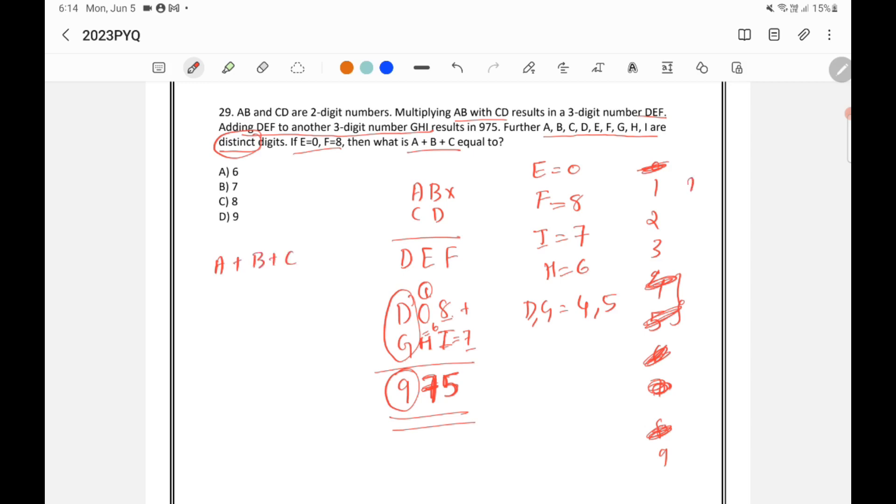Now the remaining digits are only 1, 2, 3 and 9. This is the remaining digits. So either A, B and C will be from 1, 2, 3. It could be from 1, 2, 9. It could be from 1, 3, 9 or it can be 2, 3, 9.